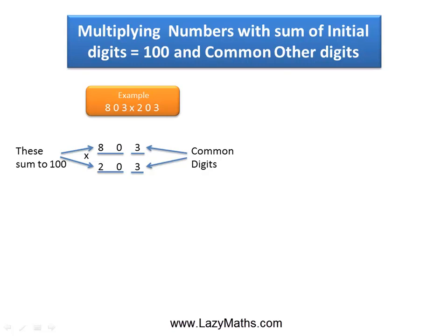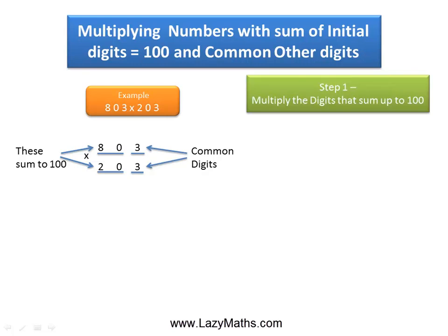So we can apply this shortcut. The first step is to multiply the digits that sum up to 100. So we multiply 80 and 20 together and we get 1,600.